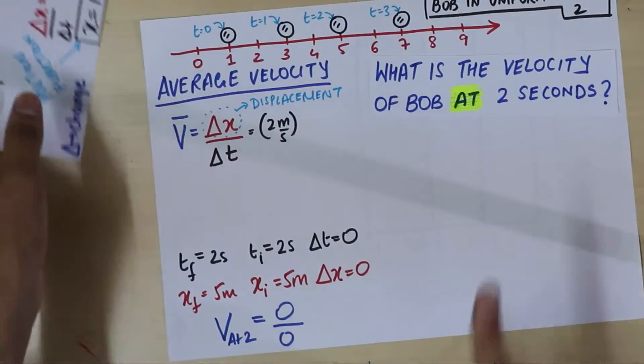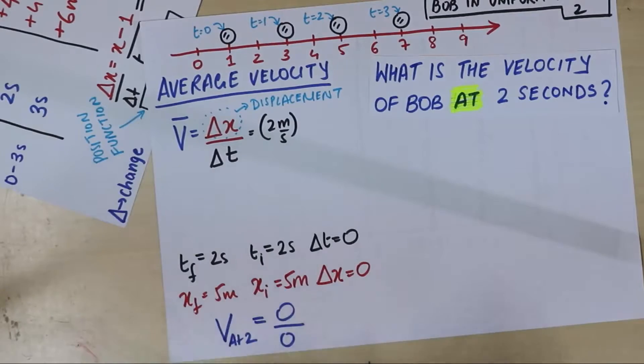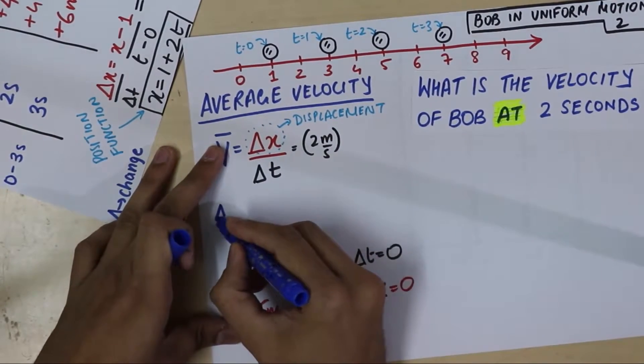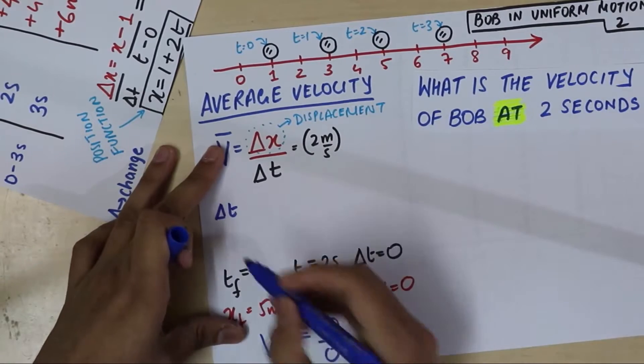What that means is, over here, I'm going to plug. If I take a delta t value of, let's say, 0.0000002 seconds,